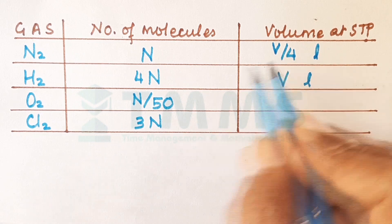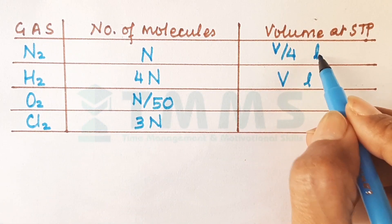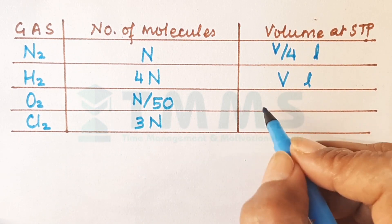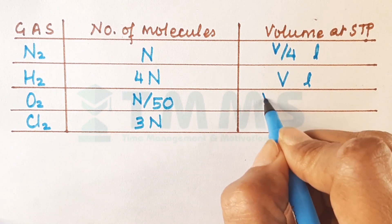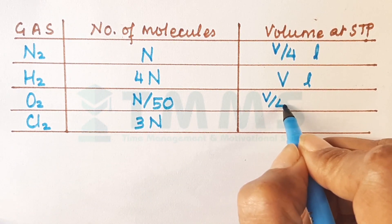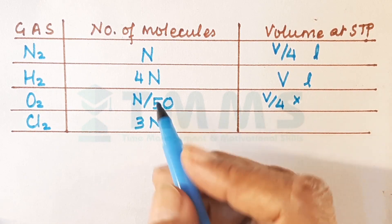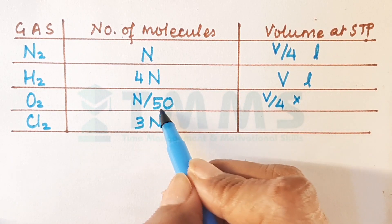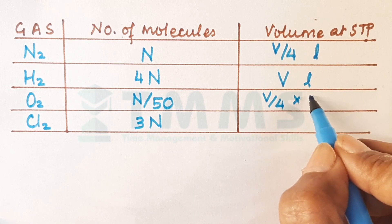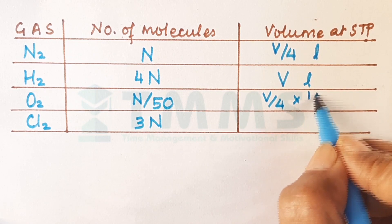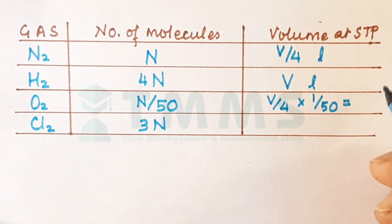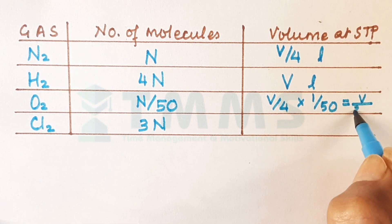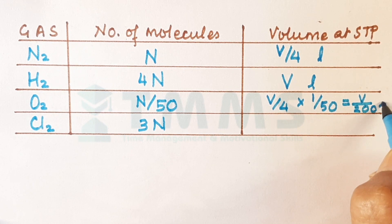Now if N is V upon 4 liters then N upon 50 will be V upon 4 multiplied by, can you see compared to this N this is 1/50th? So here also it will be multiplied by 1 upon 50. So what will we get here? We will get here V upon 200 liters.